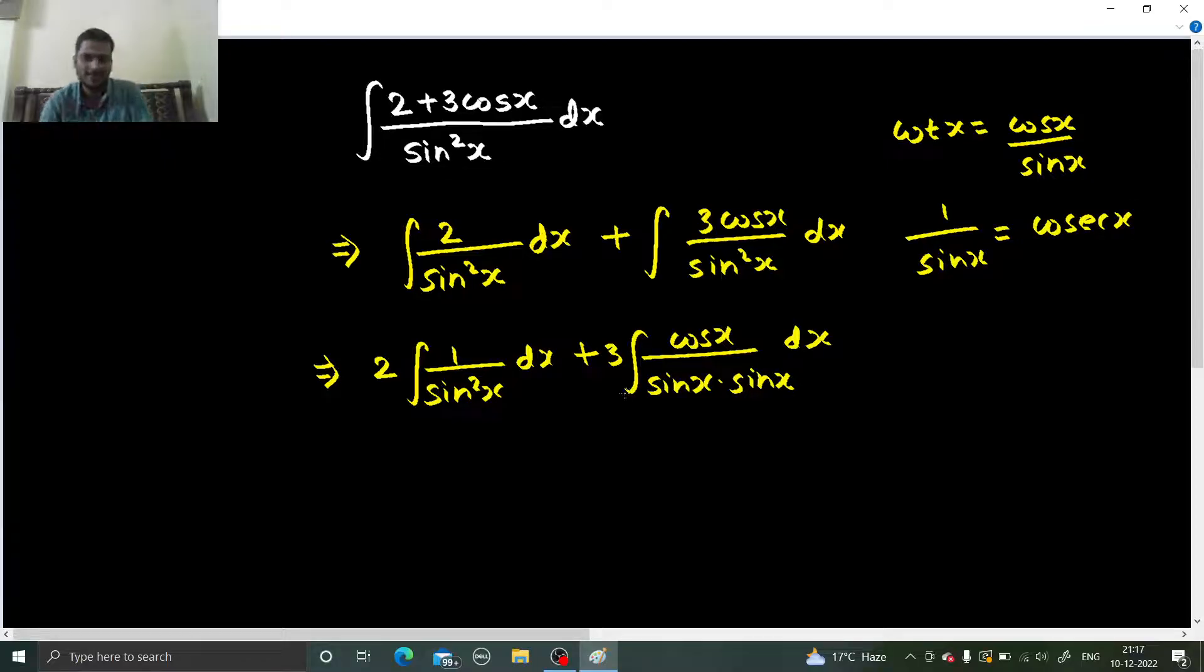So this is nothing but cosecant x cot x - only cos x by sine x is cot x, and one by sine x and one by sine x is cosecant x, and their product is there. So cosecant